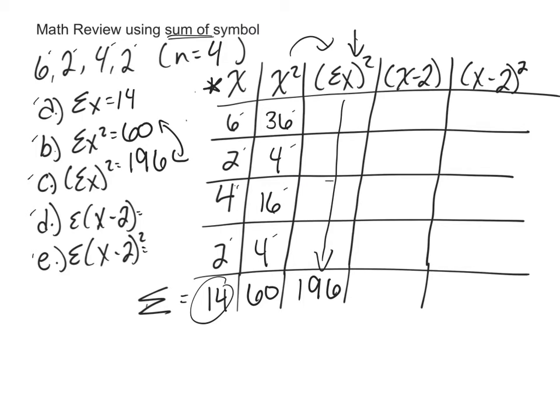x minus 2. I'm just going to take x minus 2, or 6 minus 2, so in this square it's going to be 4. 2 minus 2 is 0, 4 minus 2 is 2, and 2 minus 2 again is 0. When I sum up, I add 4 and 0 and 2 and 0, so my sum of x minus 2 is 6.